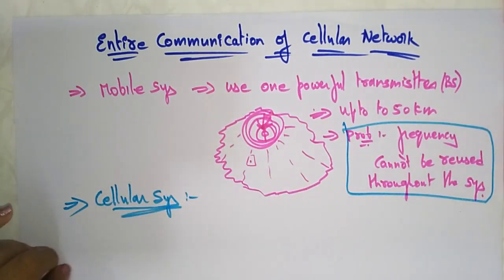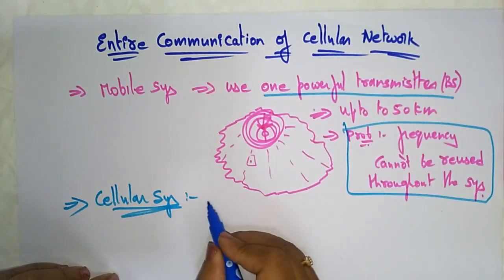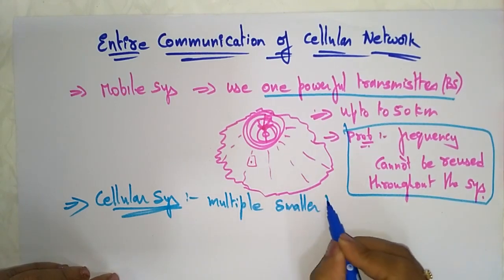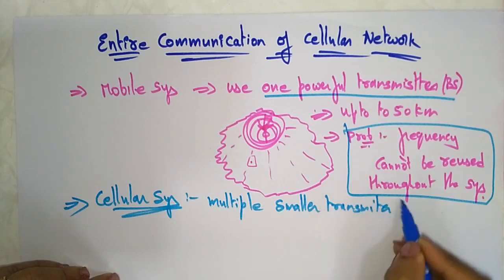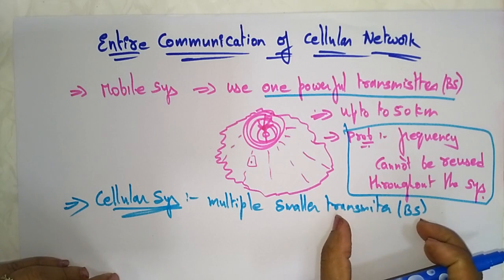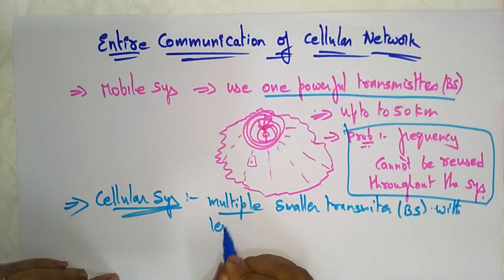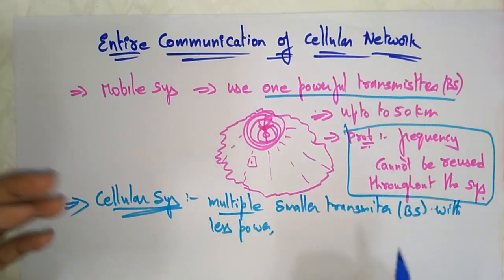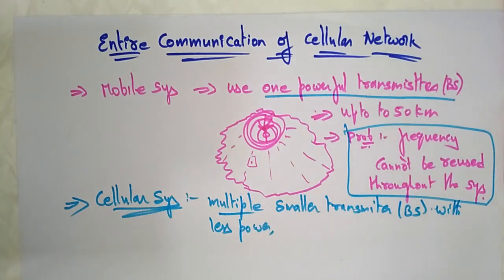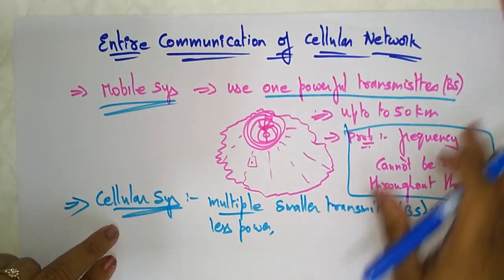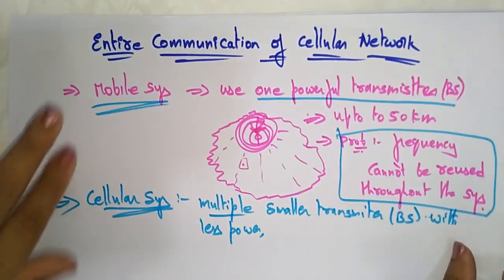In the cellular network, it was suggested that multiple smaller, less powerful transmitters — that is, multiple base stations — would be used instead of one powerful transmitter. With multiple base stations of less power, the frequency can be reused throughout the system. This is the main difference between the old mobile systems and the cellular systems we use today.